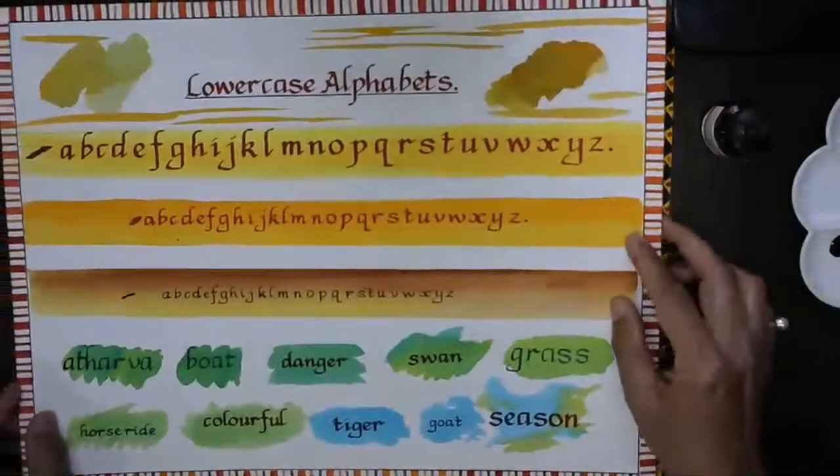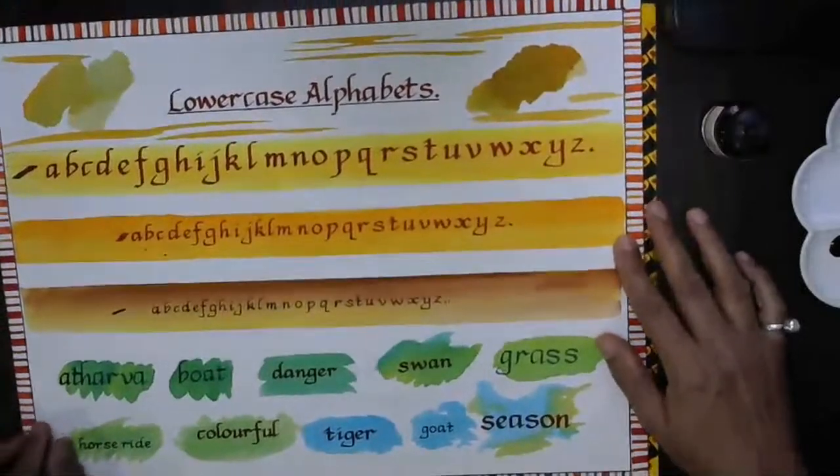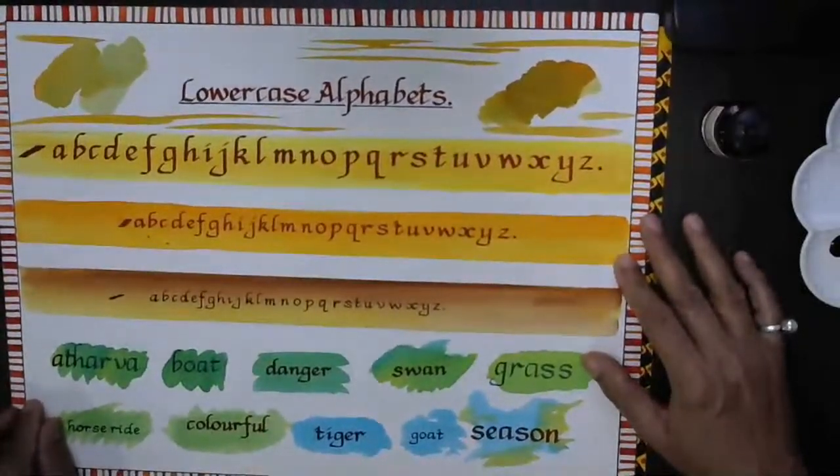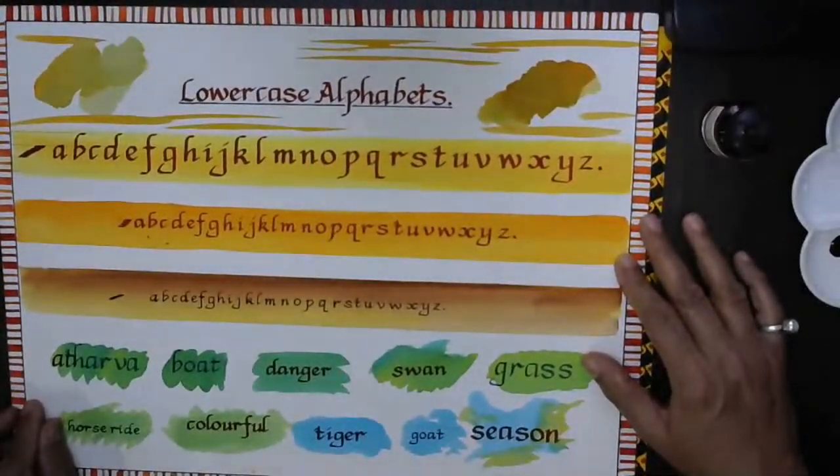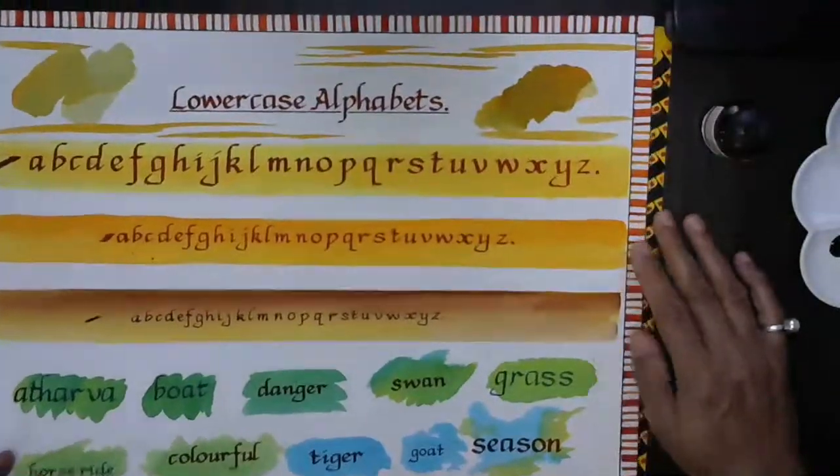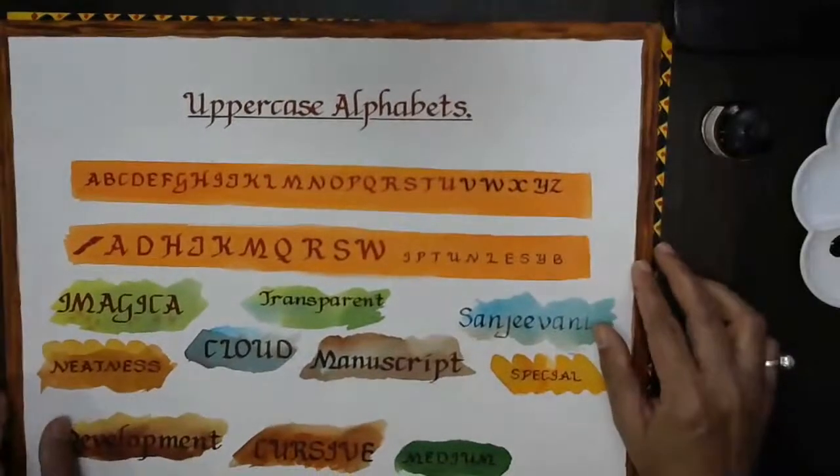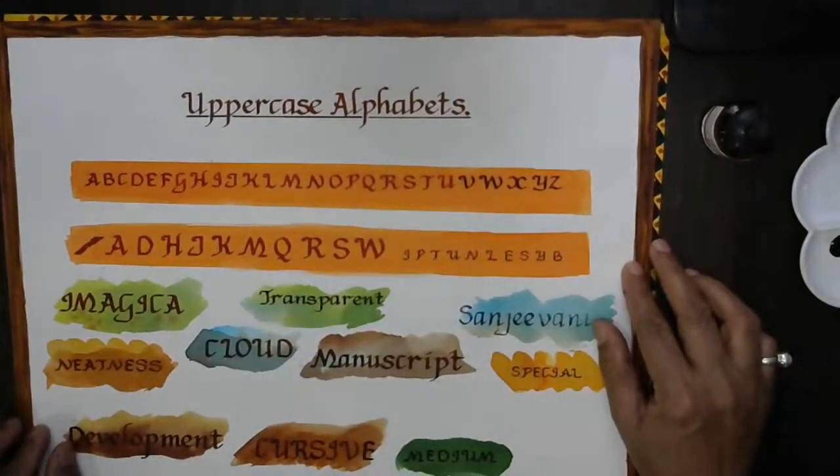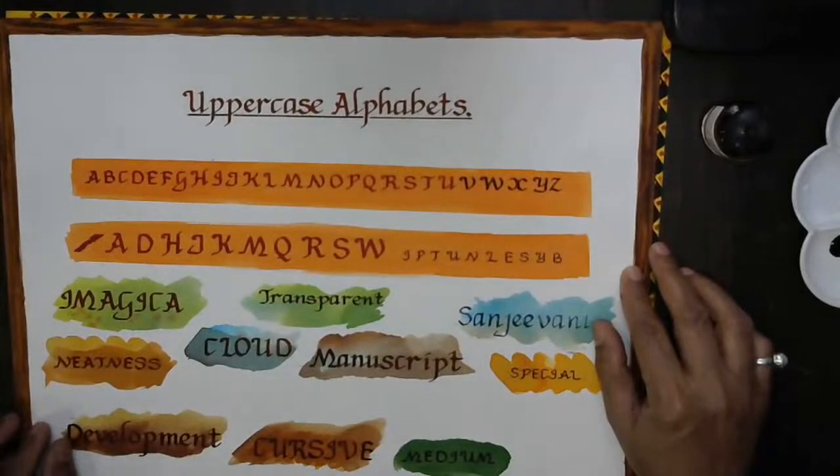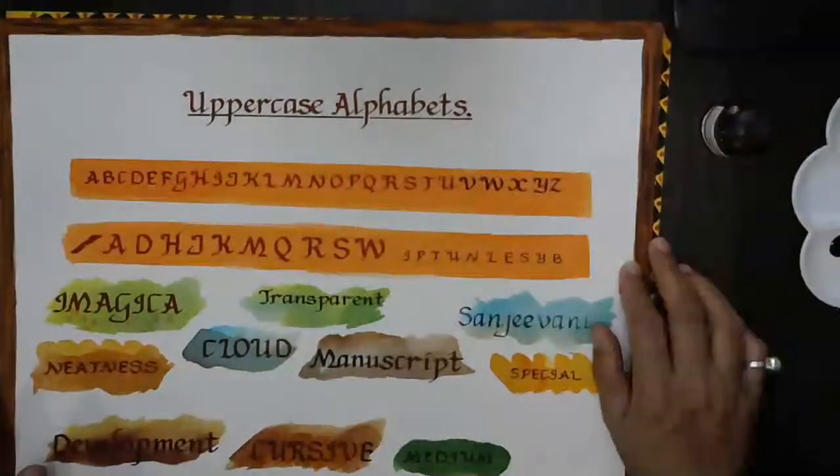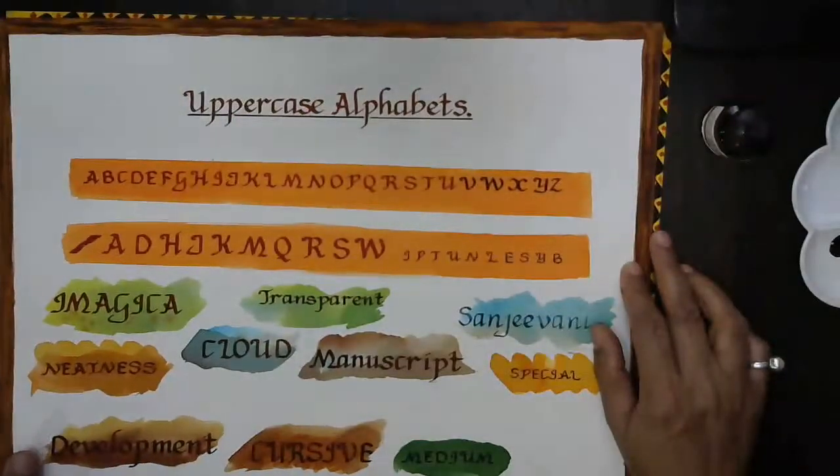This is called the chancery cursive font. This is the lowercase alphabets. Then we will have the uppercase alphabets. So now let me start.